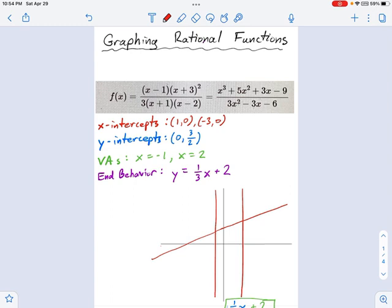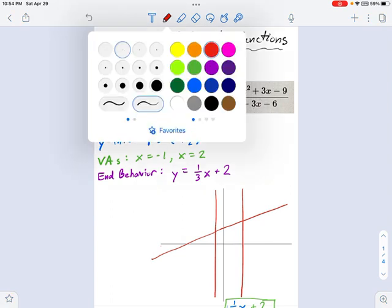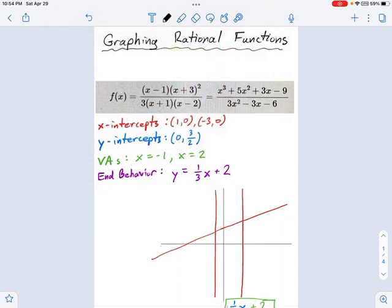Remember, this is the y-intercept right here. This is the slope. If you forget how to draw straight lines, you should probably review that. And now I'm going to draw the asymptotes. So I've got an asymptote at 1 comma 0 right there, and another one at negative 3 comma 0. And a y-intercept of 0 comma 3 halves. So right around there.